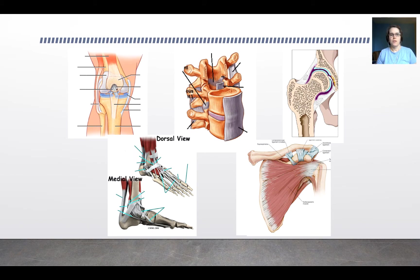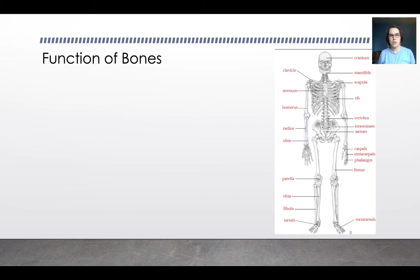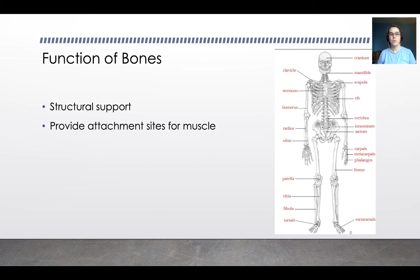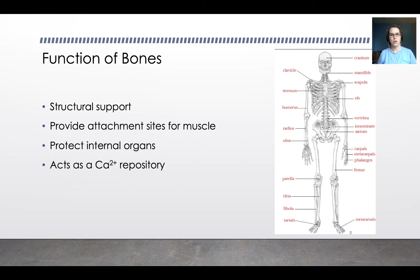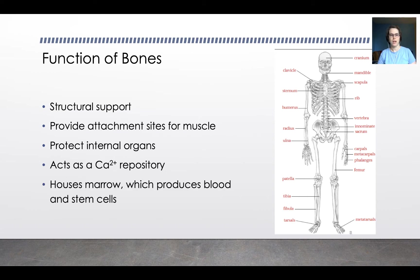Bone is everywhere in the human body — the knee, the spine, the hip, feet, shoulders, everywhere. The skeleton is incredibly important because it functions as an augmentation for movement. Without the skeleton, we couldn't move, and it protects us. The basic functions of bone are to provide structural support, provide attachment sites for muscles, to protect our internal organs, and to act as a repository of calcium, which our muscles need for contracting. The bones also house the bone marrow, which produces our blood and our stem cells.